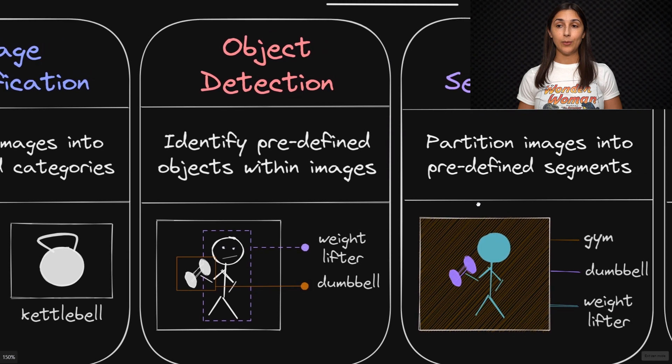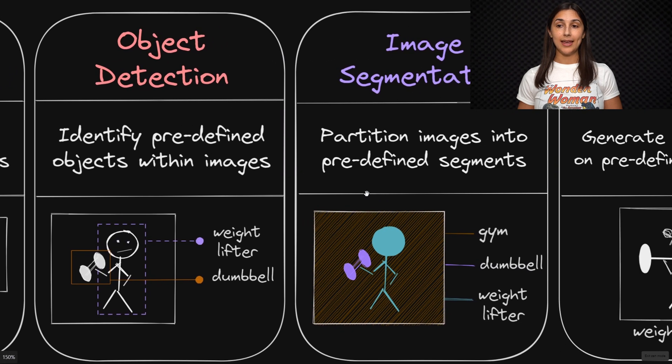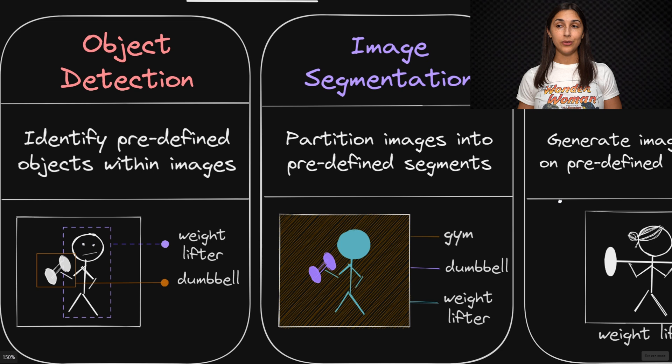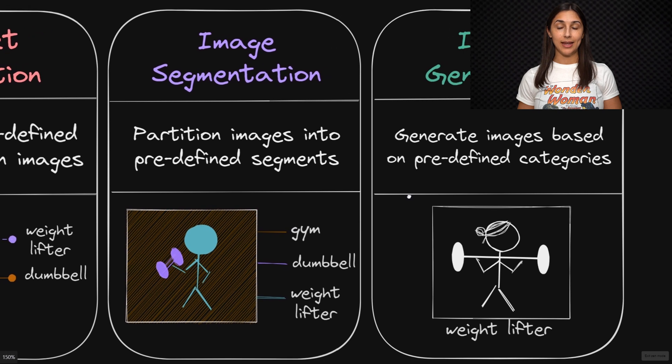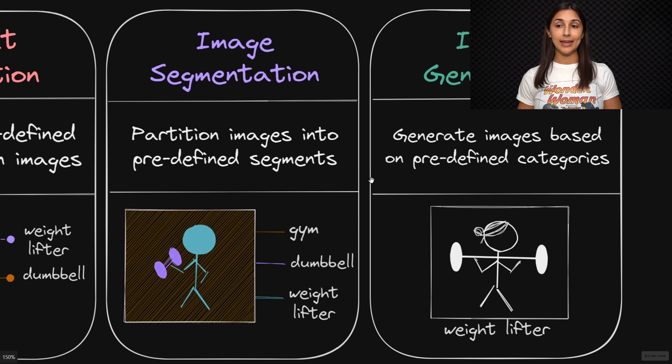Similarly, with object detection, we can identify predefined objects within an image using artificial neural networks. We also have image segmentation, where a neural network can partition an image into predefined segments.